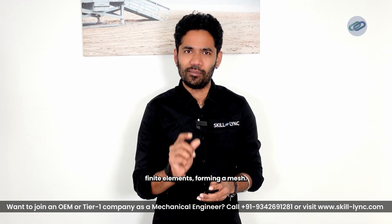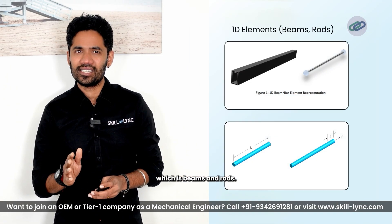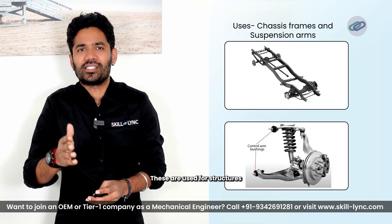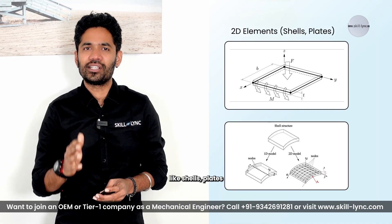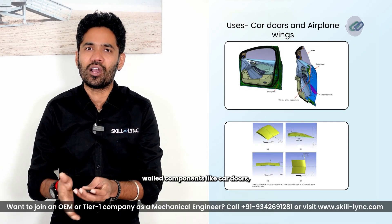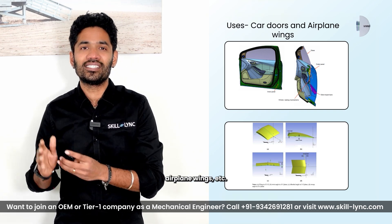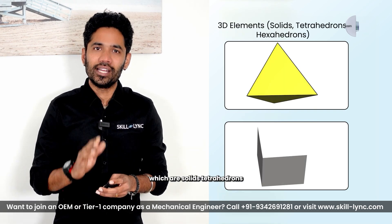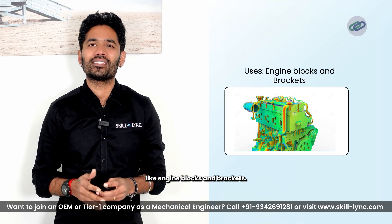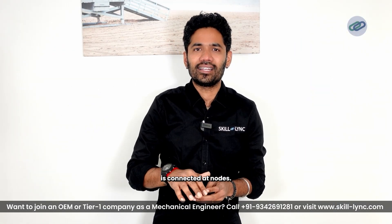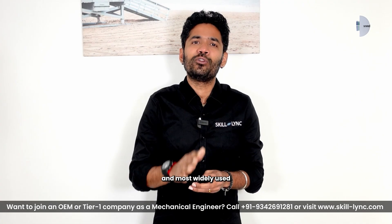FEA divides a component into smaller finite elements forming a mesh. These elements are categorized as: 1D elements such as beams and rods, used for structures like chassis frames and suspension arms; 2D elements like shells and plates, ideal for thin-walled components like car doors and aeroplane panels; and 3D elements such as tetrahedrons and hexahedrons, used for bulky parts like engine blocks and brackets. Each element is connected at nodes, helping engineers understand how a part behaves under different conditions.